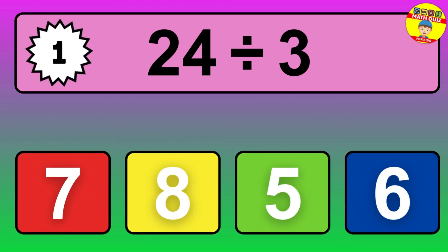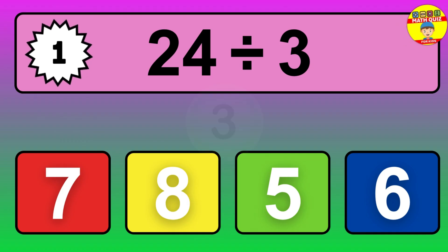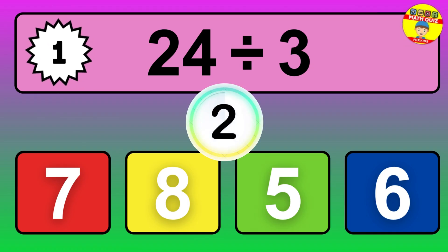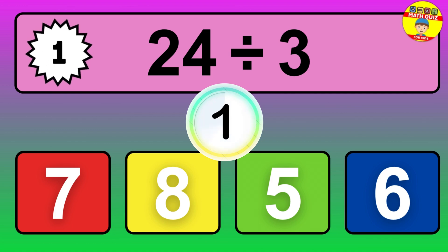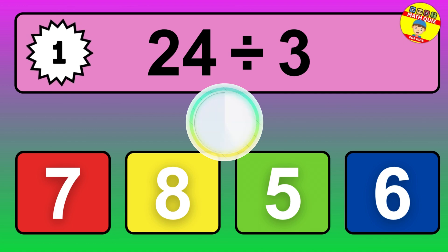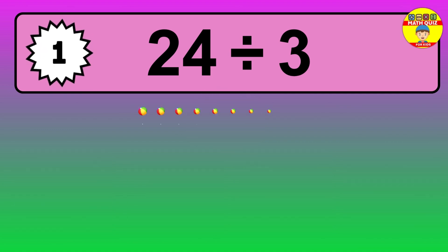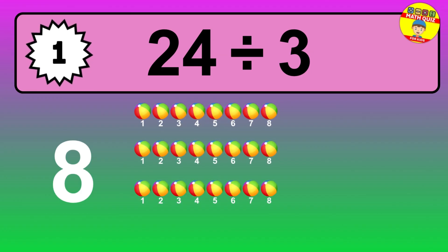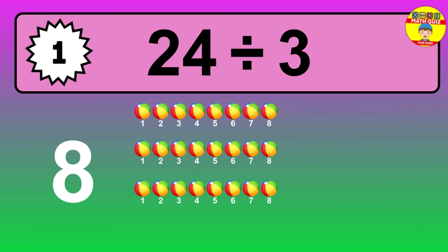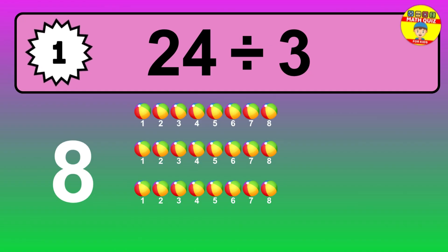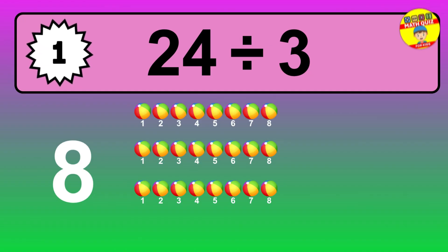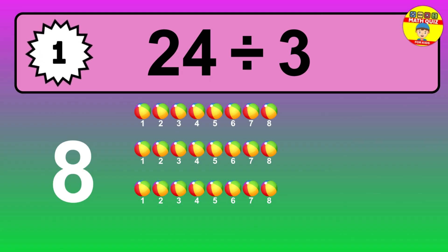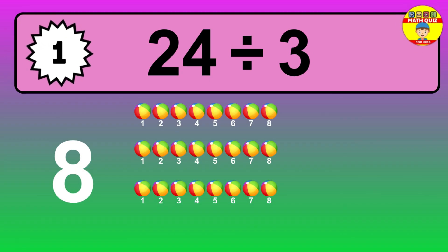24 divided by 3 — time to think. Let's go to the solution. Divide the number 24 by 3. Each group contains 3 units, so dividing 24 by 3 results in 8 equal groups. Thus, the result is 24 divided by 3 equals 8.